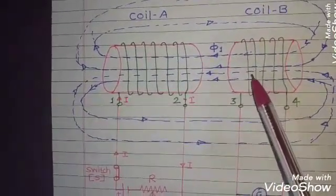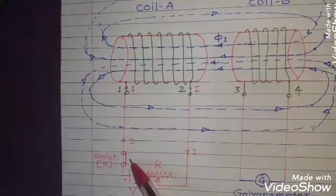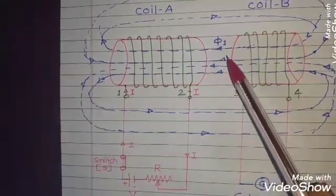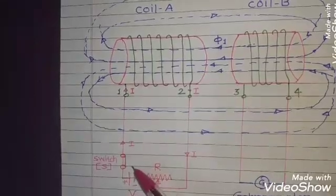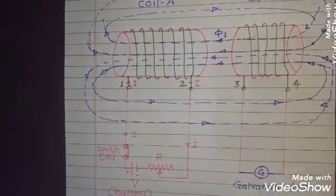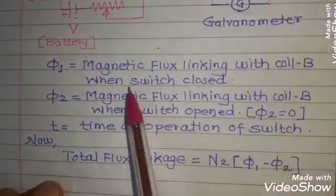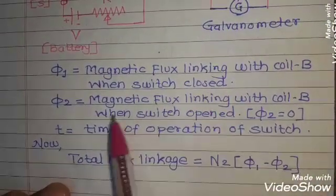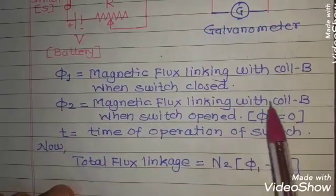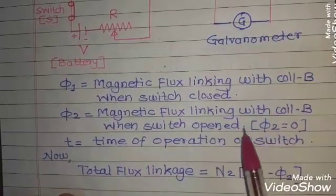It means that initially when the switch is closed, the flux is phi1. When the switch is open, the flux goes to the 0 value. It is written here, phi1 is the magnetic flux linking with coil B when the switch is closed. And phi2 is the magnetic flux linking with the coil B when the switch is open.